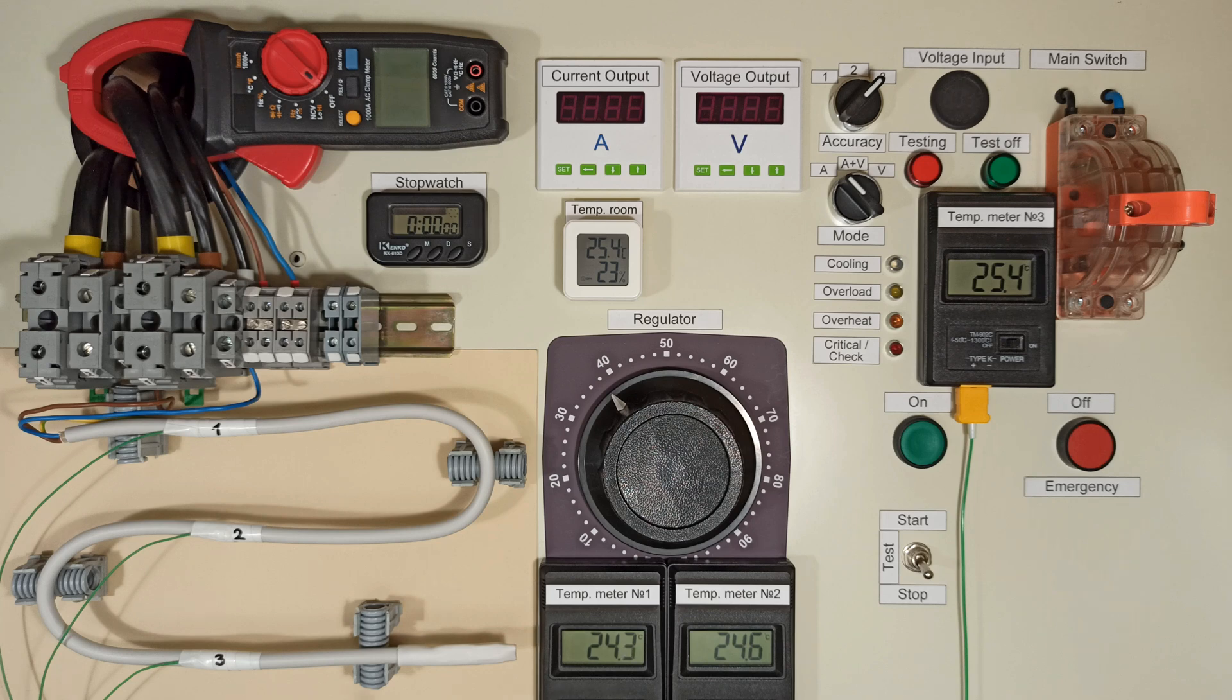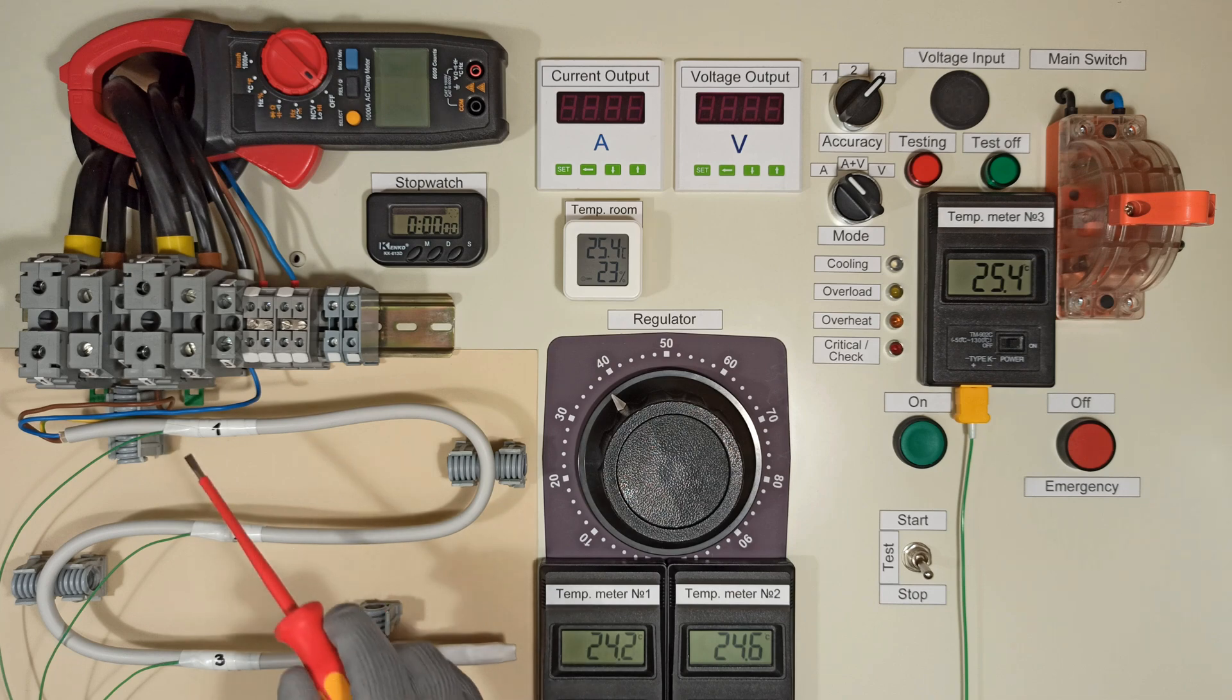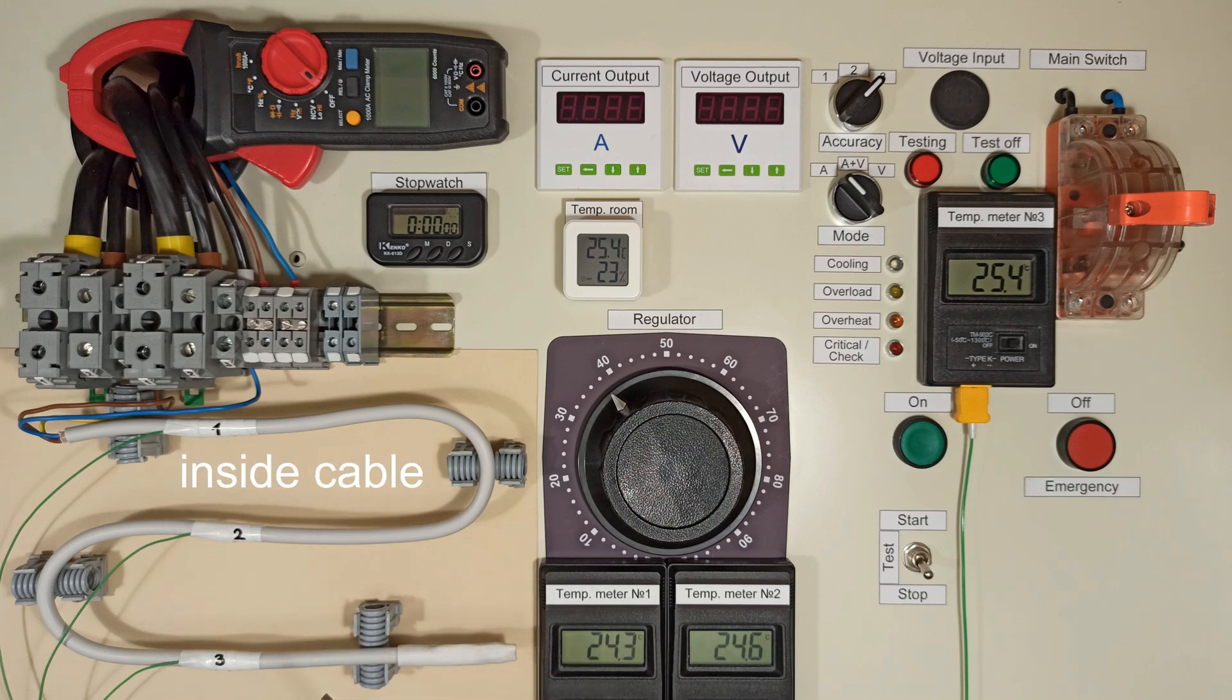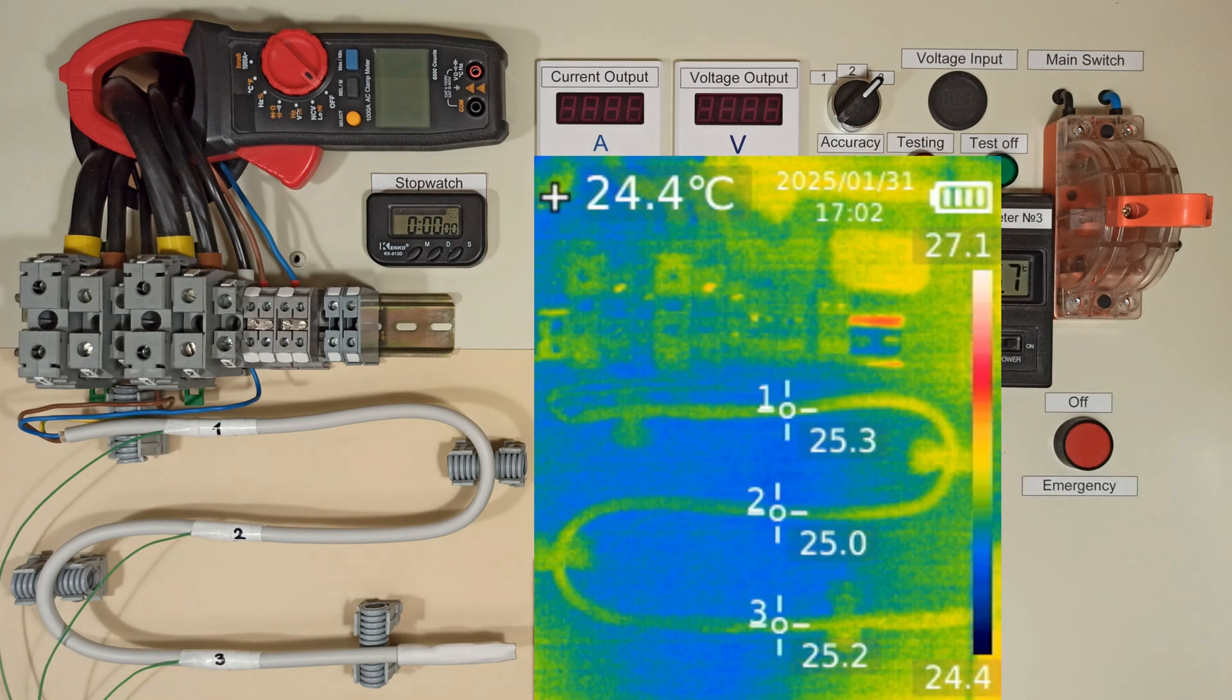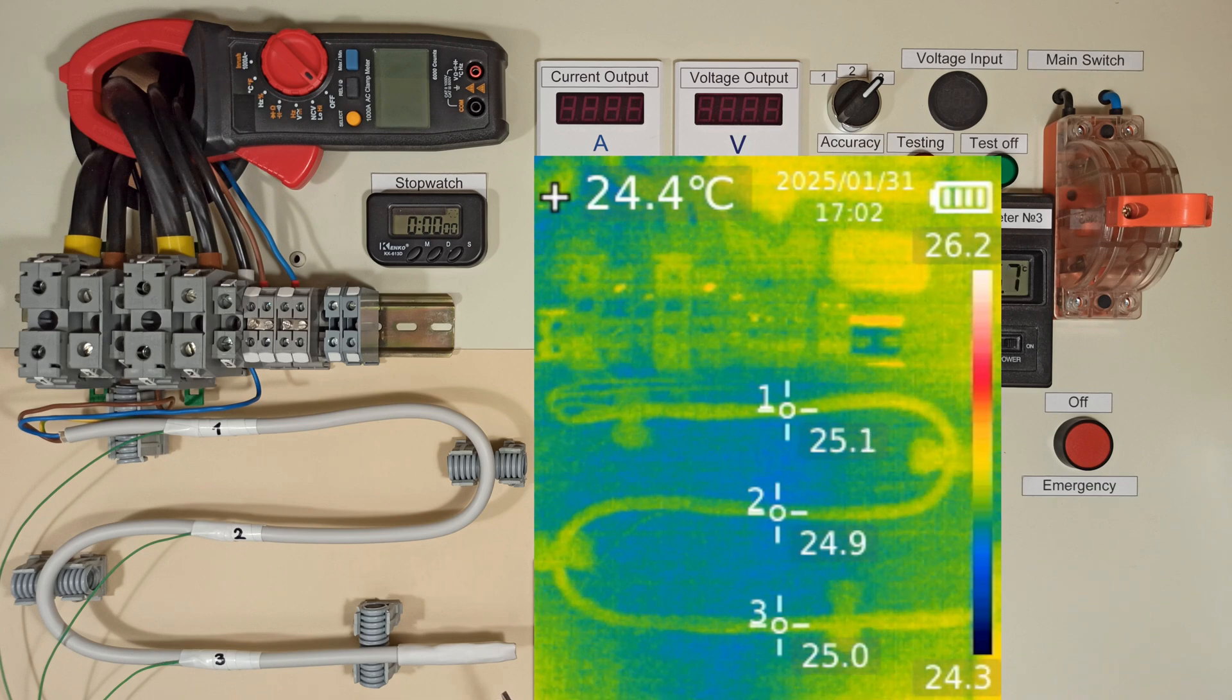Hey guys, I prepared NYN 3G 1.5 cable for testing in the previous video. The temperature sensors are placed inside the cable, so the thermometers measure the internal temperatures. And the thermal imager will measure the external temperatures of the cable.